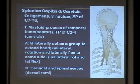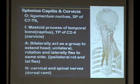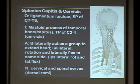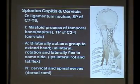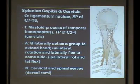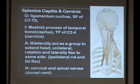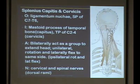The capitis portion goes up to the mastoid. The cervicis goes to the transverse processes of C2 to C4. Splenius capitis goes all the way to the skull; cervicis just goes to the neck. They share a common origin, though the capitis may arise from the upper portion and the cervicis from lower. To simplify, we say the whole thing comes from C7 to T6.